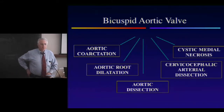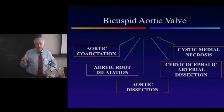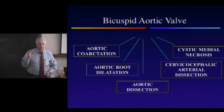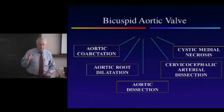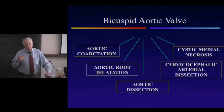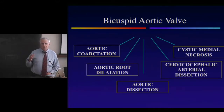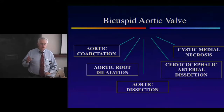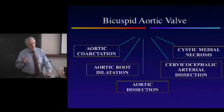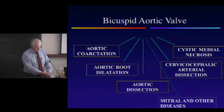I believe that the aortic root dilatation is related to metalloproteinase abnormalities. But if you look at bicuspid valves or aortic stenosis in general on autopsy, there's almost always a localized swelling. Albeit there really is a genetic mechanism, there is specifically an area where there is more trauma in the aorta, and I think the aorta responds to that in an abnormal way.